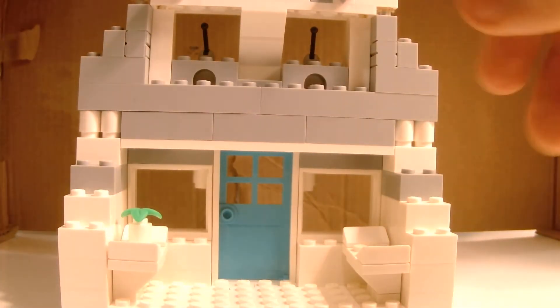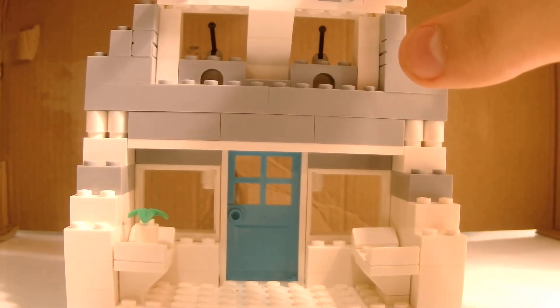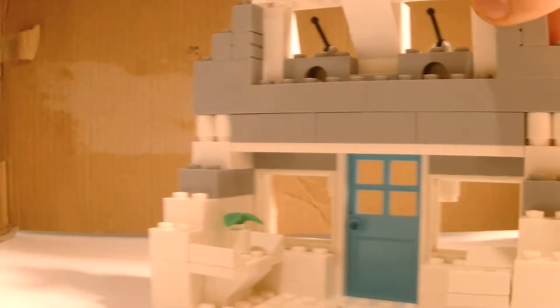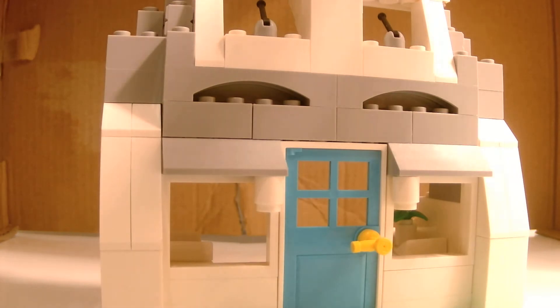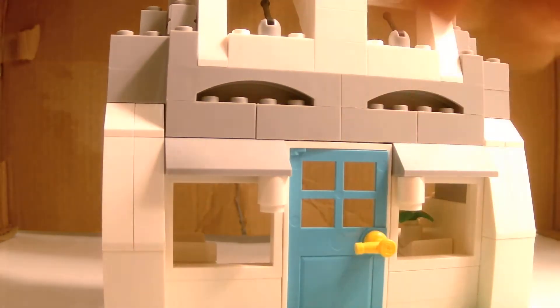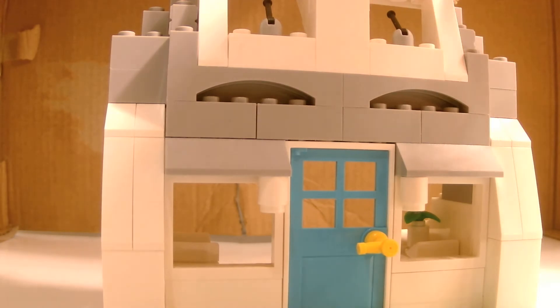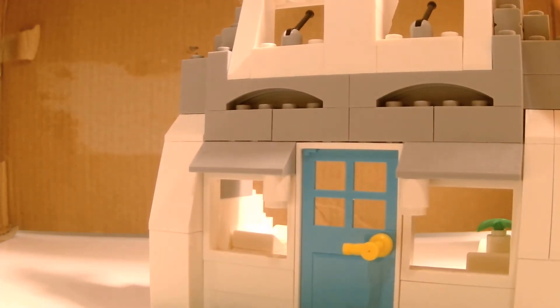I built this after getting one of those big boxes of creator bricks, and yeah, this is what I was able to build. The door is just a blue door with a yellow hose piece attachment. Everything else is normal.